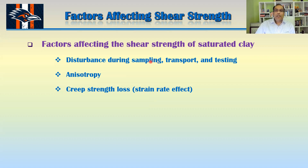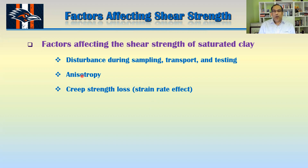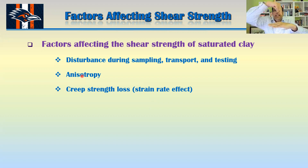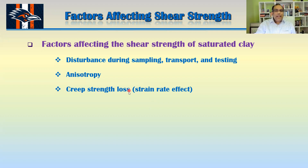These are three factors that might have significant impact on the shear strength. First, disturbance during sampling, transport, and testing. Second, anisotropy — whether the soil shows isotropic properties, meaning the same in every direction, versus anisotropy where strength differs depending on direction, which can happen with flaky particles. Third, creep strength loss or the strain rate effect — whether you are applying the load very slowly or very fast.